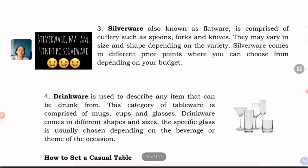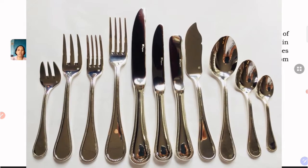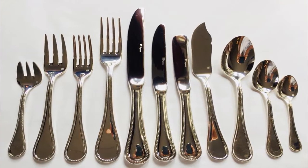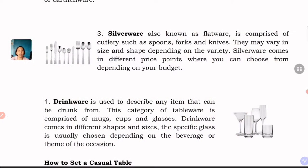Silverware, also known as flatware, is comprised of cutlery such as spoons, forks, and knives — basically what we use to pick up food. They may vary in size and shape and come in different price points. There are stores that carry all kinds of kitchenware where you can enjoy looking at the different styles and designs of silverware.